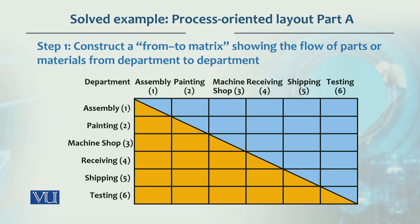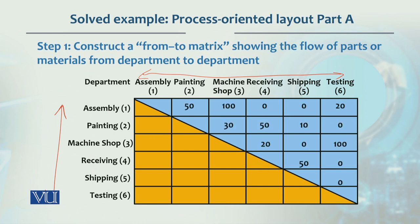Assembly is department 1, painting is number 2, machine shop is 3, receiving is 4, shipping is 5, and testing is 6. Now looking at the flow between assembly and painting, the movement is 50.